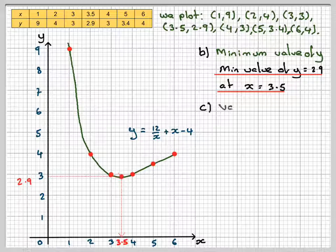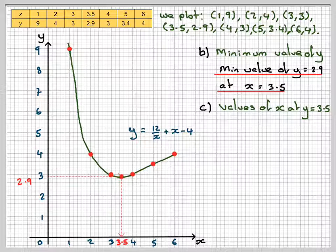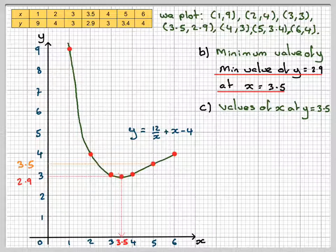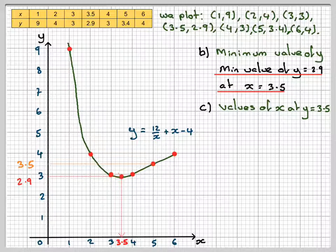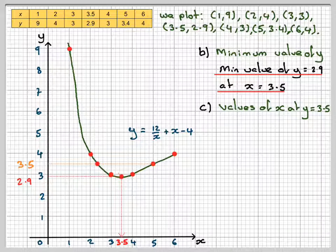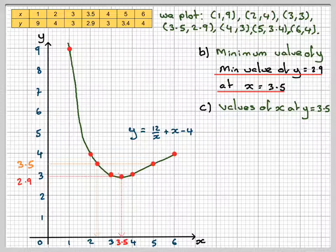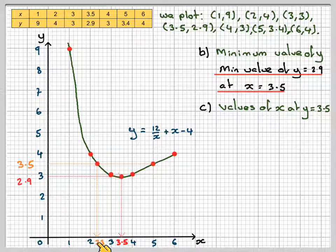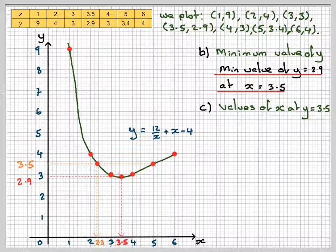We're asked to find the value of x, or the values of x, when y = 3.5. We find 3.5 here on the y-axis. We draw a line across. We will see that it cuts in two places, which is there and there. We'll read down off our graph. This one gives me 2.3, so you'll be allowed to probably be plus or minus 0.1 in an exam. So 2.3.